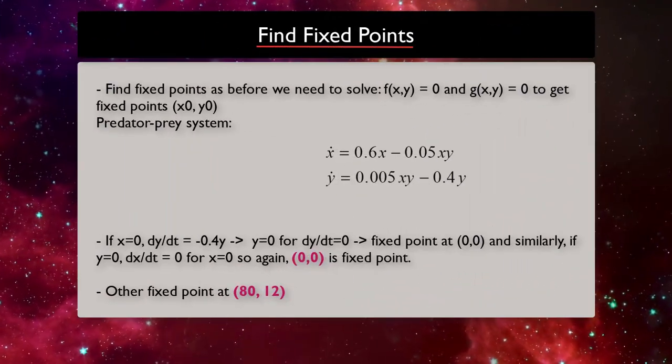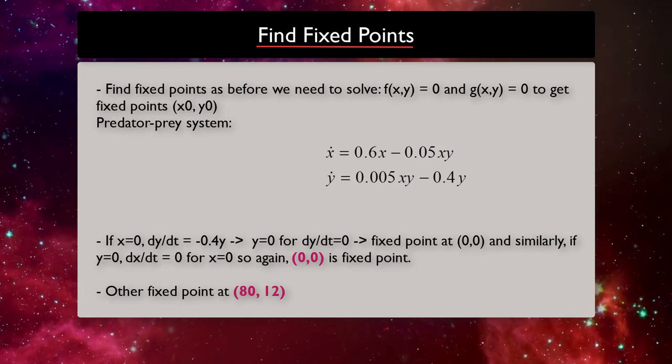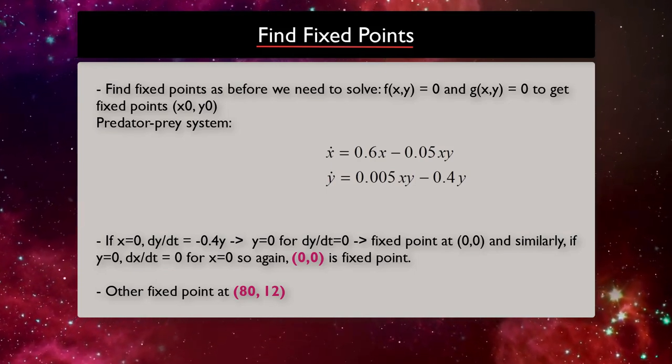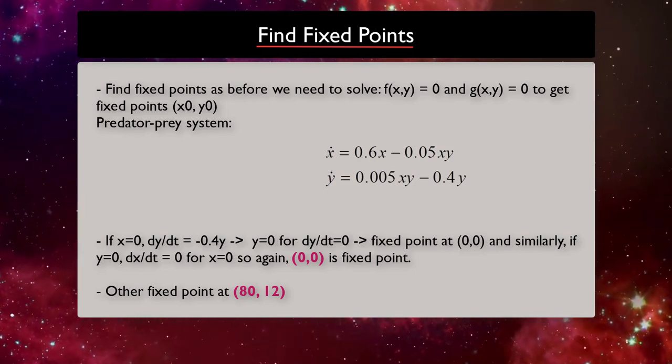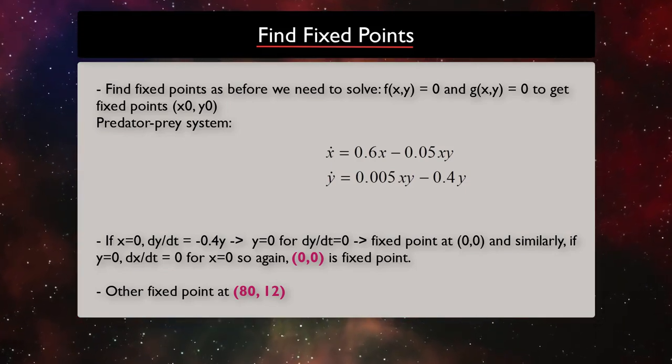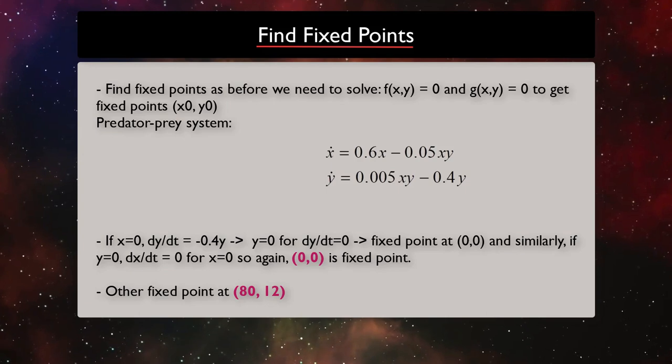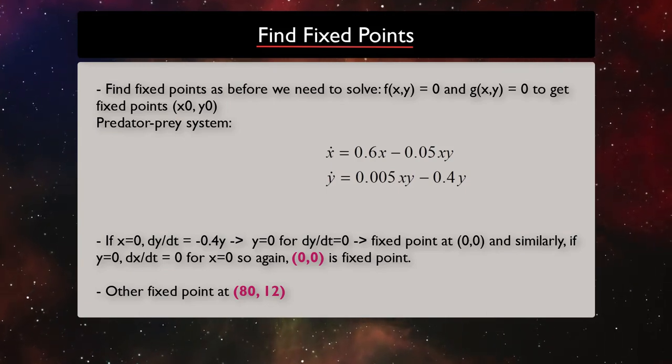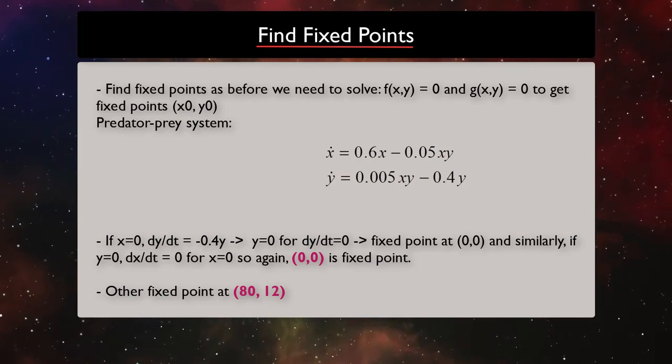To find fixed points, what we need to do is, as before, putting all derivatives equal to 0. For a two-dimensional system, we need to solve dx/dt = 0 and dy/dt = 0 to get fixed point (x0, y0).